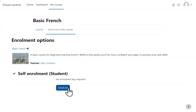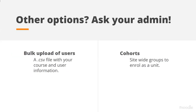There are additional enrolment methods managed by the admin that are useful for large numbers of students. For example, the admin can upload a CSV spreadsheet to put students directly into your course, or use Cohorts — pre-defined groups of students that can be added to your course as a unit. For more on these, check the Introduction to Moodle for Administrators webinar.